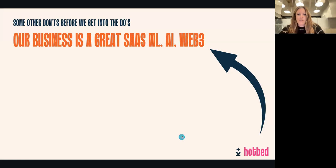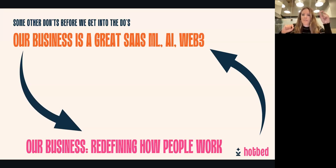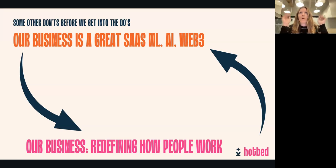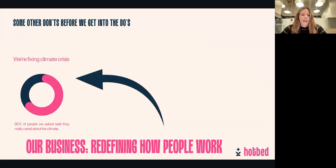We also see this a lot, which is actually kind of crazy — on the first slide there are two different one-sentence descriptions about what the business does, and those two descriptions are different from one another. If you come up with your one-sentence description of what the business does, it should be the same one sentence you use all of the time — on the first slide of your deck, on your LinkedIn page, and on your website.